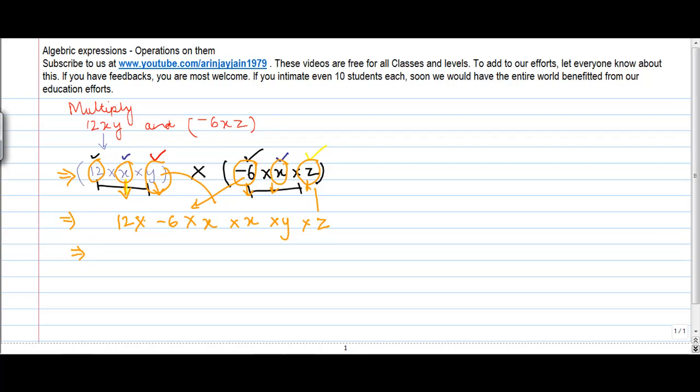And then I start multiplying them. So I get 12 into minus 6 is equal to minus 72 into. Now I have x and x. x means x to the power 1, x to the power 1. Now, we know whenever you multiply this, in the last example also I told you, you do a sum of the powers. 1 plus 1 into y. That's the only number which is there, and into z.